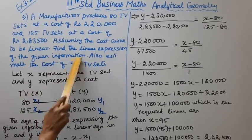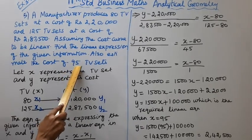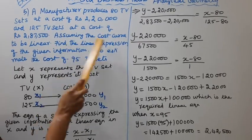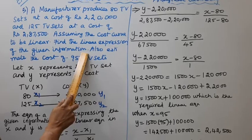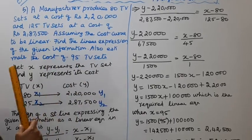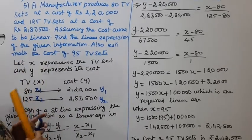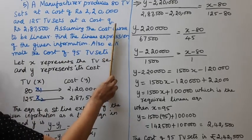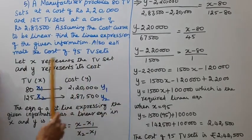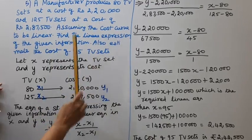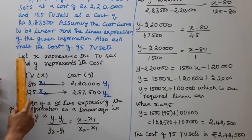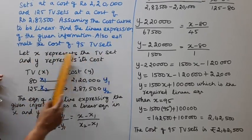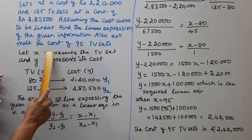We will find the expression or equation. Let x represent the TV set and y represents the cost. 80 TV sets cost 2 lakh 20,000, and 125 TV sets cost 2 lakh 87,500.